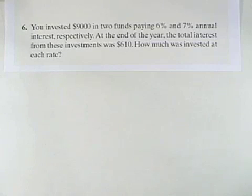You invested $9,000 in two funds paying 6% and 7% annual interest, respectively. At the end of the year, the total interest from these investments was $610. How much was invested at each rate?